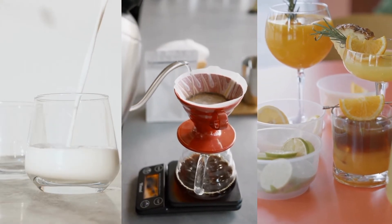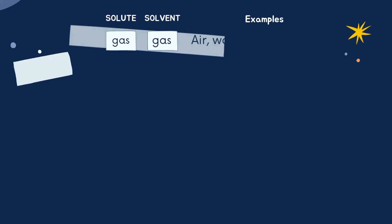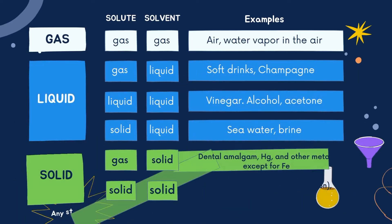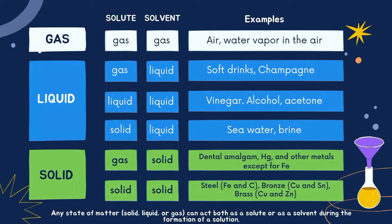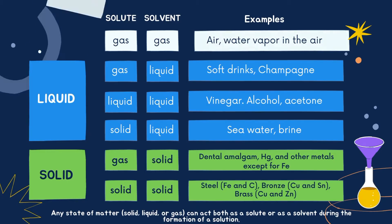Solutions can be classified based on the state of matter of their components. Any state of matter — solid, liquid, or gas — can act both as a solute and as a solvent during the formation of a solution. Therefore, depending on the physical state of the solute and solvent, we can classify solutions into different types.